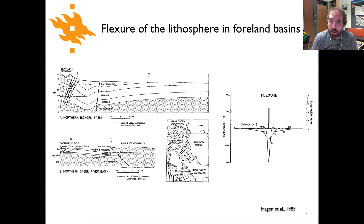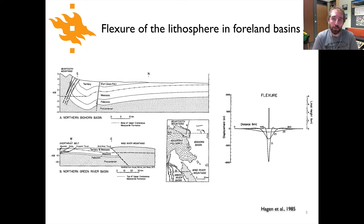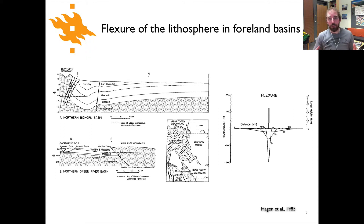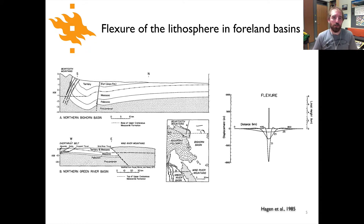We're going to look at some examples of elastic deformation of the lithosphere, starting with foreland basins. These are sedimentary basins that form proximal to mountain ranges as a result of downward flexure of the lithosphere caused by the mountain range being uplifted and thrust upon the lithosphere beneath it.